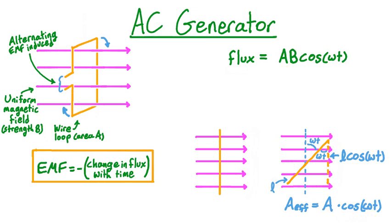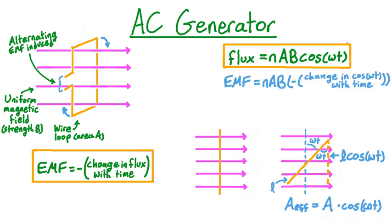The flux we've calculated is for one single loop, but many generators contain multiple loops to increase the output EMF. If there are N identical loops each with a flux of AB cosine omega t, then the total flux through all loops is N times AB cosine omega t. To find the EMF, we take the negative of the change in this expression with respect to time. The only time-dependent part is cosine omega t, and the derivative of cosine omega t is negative omega sine omega t, so taking the negative gives us positive omega sine omega t.